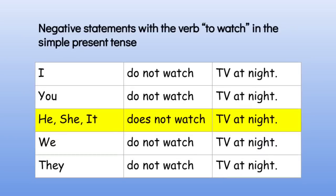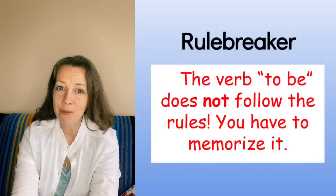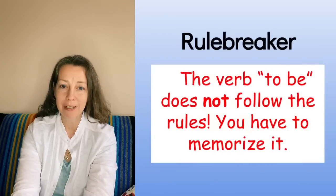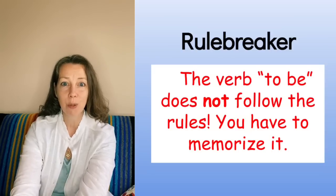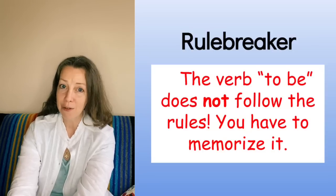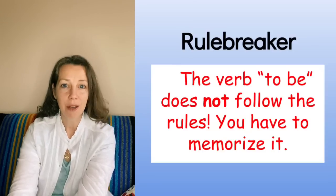Here are examples of negative statements with the verb 'to watch' in the simple present tense. I do not watch TV at night. You do not watch TV at night. He, she, it does not watch TV at night. We do not watch TV at night. Remember, the verb 'to be' is always the rule breaker — it does not follow the rules, so you have to memorize it.